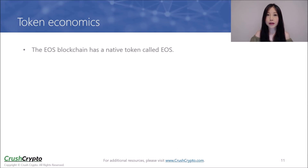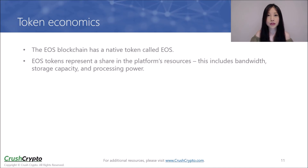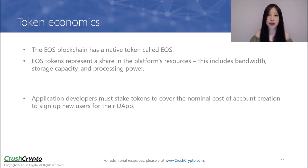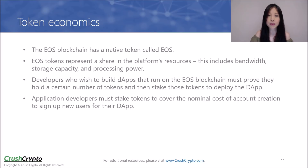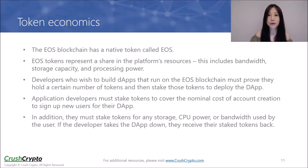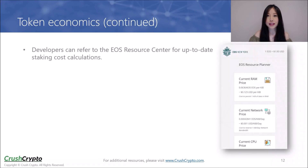The EOS blockchain has a native token called EOS. These tokens represent a share in the platform's resources, such as bandwidth, storage capacity, and processing power. Developers who want to build dApps on the EOS blockchain need to prove they hold a certain number of tokens and then stake those tokens to deploy their application. They need to stake tokens to cover the nominal cost of account creation to sign up new users for their dApp, and they also need to stake tokens for any storage, CPU power, or bandwidth used by the user. If the developer takes their application down, they can get their staked tokens back. The EOS resource center provides developers with the most up-to-date staking cost calculations.